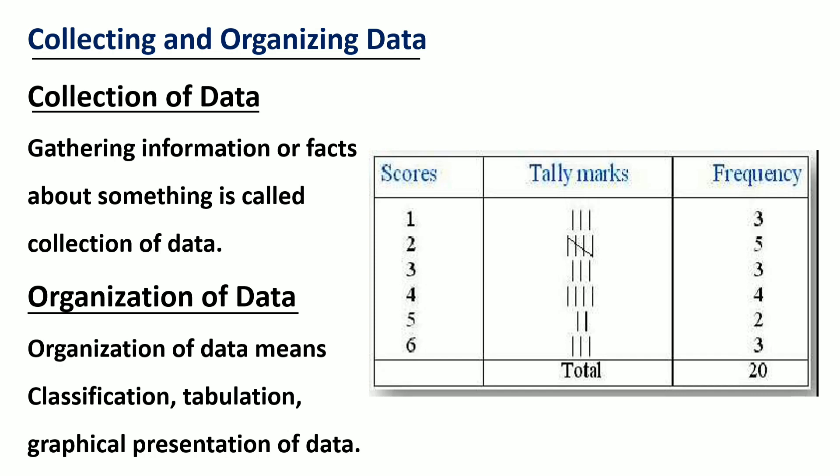Moving to the next point: collecting and organizing data. Collection of data means gathering information or facts about something. Always remember that data collected must be relevant. As I explained earlier, data collected by direct investigation is called primary data. And when data is collected from newspapers, internet, magazines and other sources, these are known as secondary data.